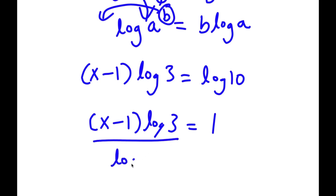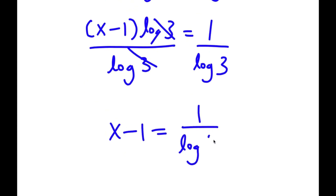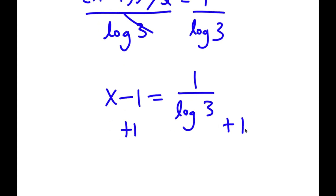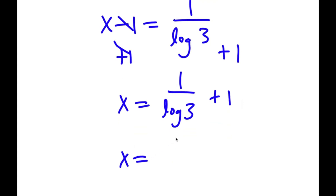If I divide both sides by log 3, I get x minus 1 is equal to 1 over log 3. So now if I add 1 on both sides, I'll be left with x is equal to 1 over log 3 plus 1. To find the exact value, log 3 equals approximately 0.4771, so I have 1 over 0.4771 plus 1.